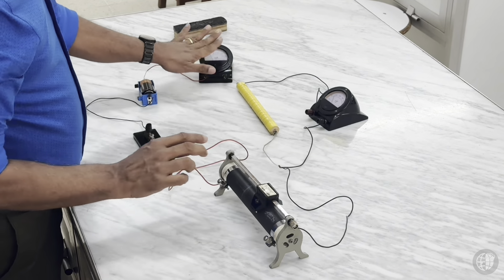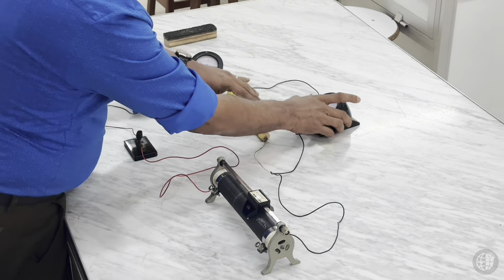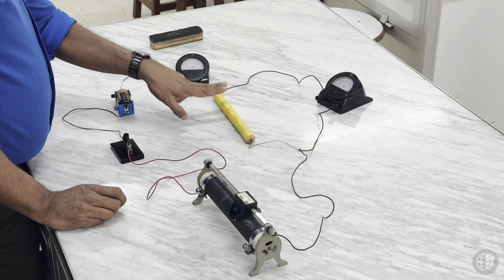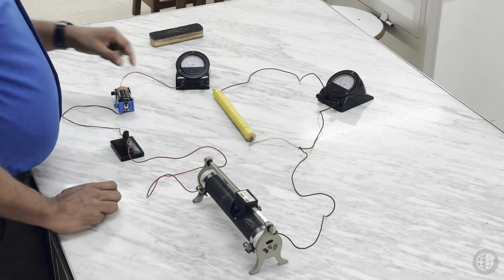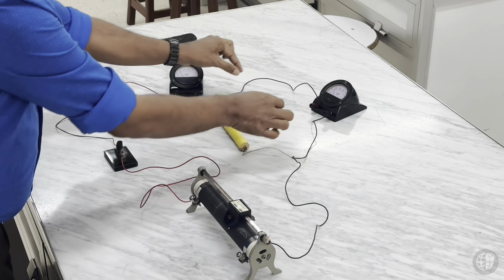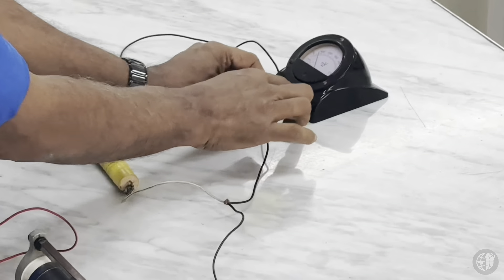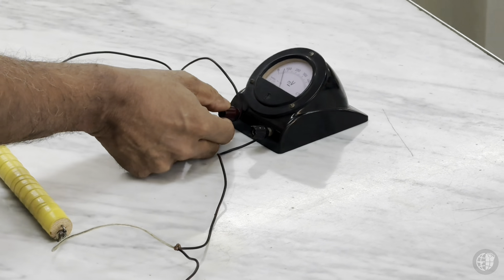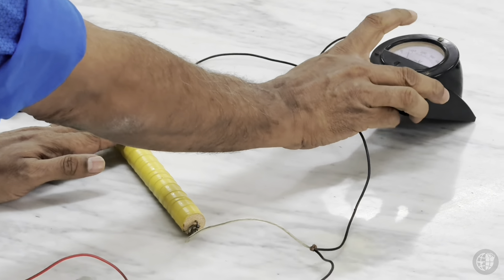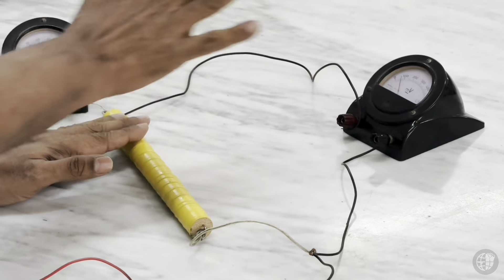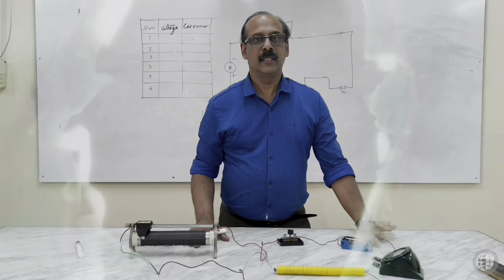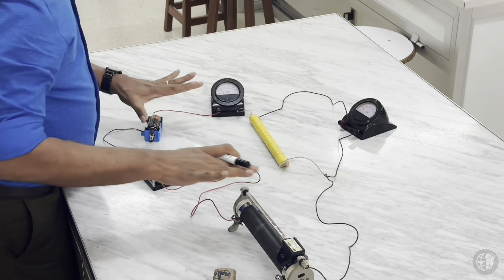Now connect the voltmeter in parallel to the load — the ammeter connects in series, the voltmeter always connects in parallel to the resistance. Take the positive of the voltmeter to positive and negative to negative. Now this circuit connection procedure is clear: from cell positive to milliammeter, then to load resistance, to rheostat, to key, and back to negative terminal.